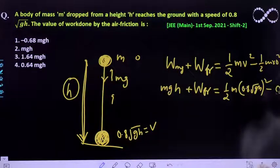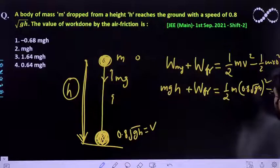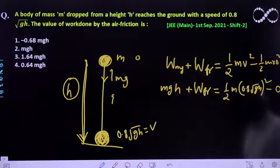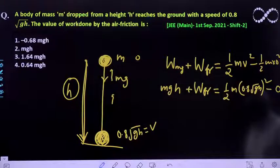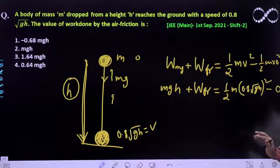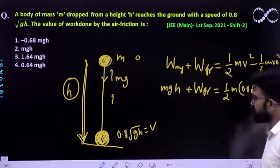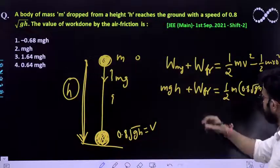It should be minus zero, so the expression for the kinetic energy that you are getting is this. So you have to solve this expression and eventually you will get the value of work done by friction.